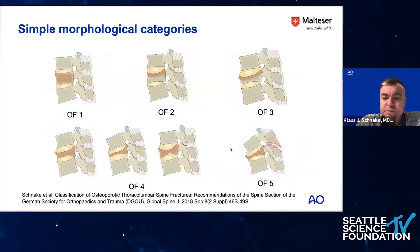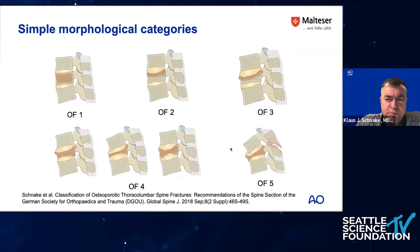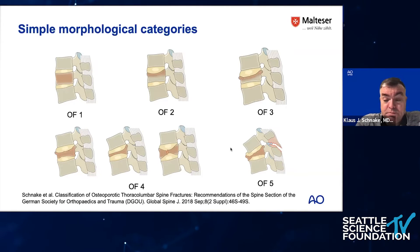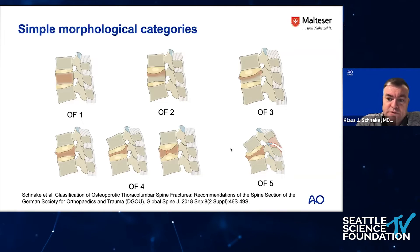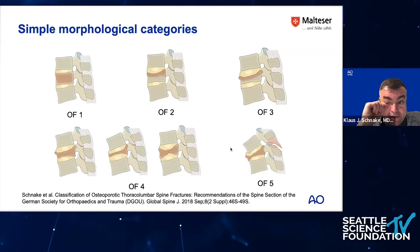OF4 can look like a complete burst type injury, a vertebral plana, a fishbone, or a pincer type — but always with both end plates involved. For OF5, the posterior tension band is either ruptured or fractured, running through the spinous process, or the ligaments are elongated or even ruptured. Sometimes it can be the anterior tension band as well.